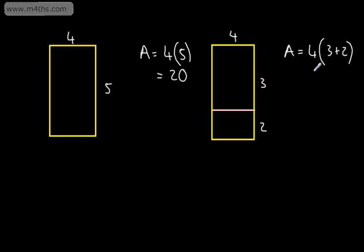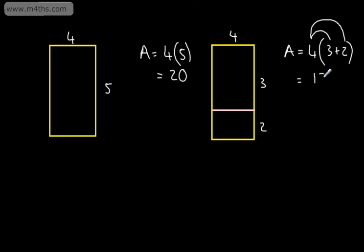If we think about this now, we're going to get exactly the same answer. What I'm going to do is multiply the 4 by the 3, then add to that 4 multiplied by 2. So what I'm doing here is multiplying everything on the outside by everything on the inside. So 4 times by 3 is going to give me 12. 4 times by 2 is going to give me 8. 12 plus 8 gives me 20.